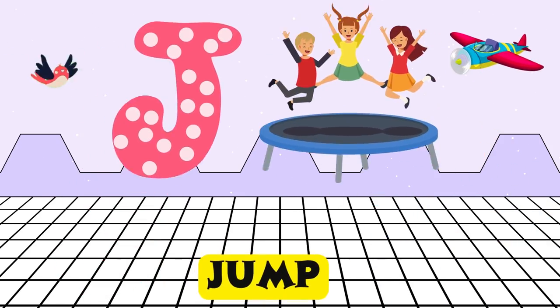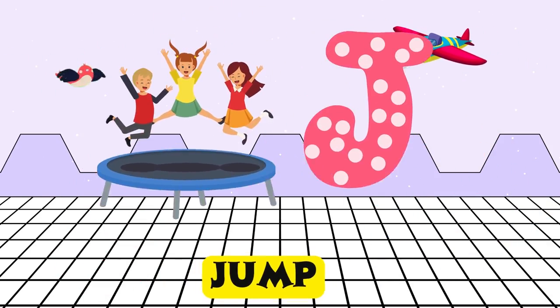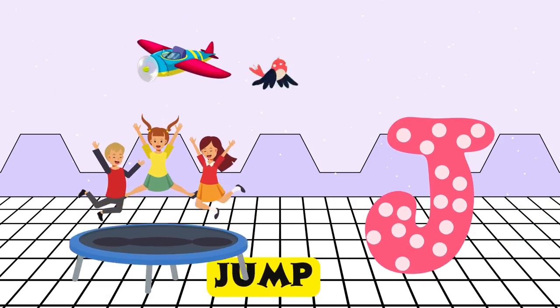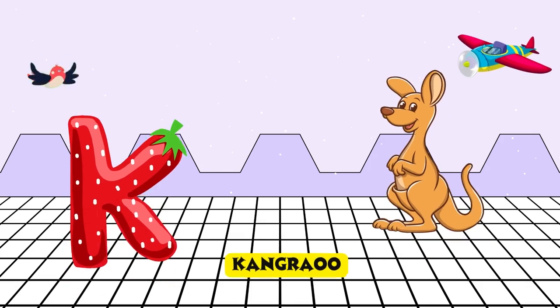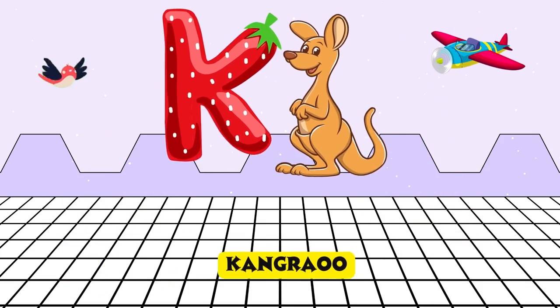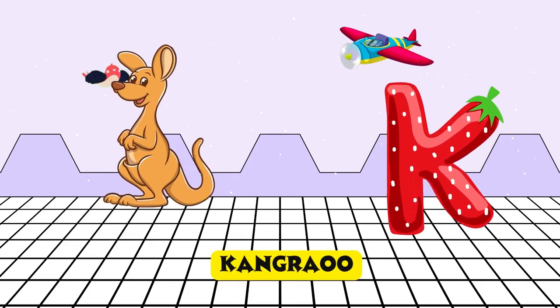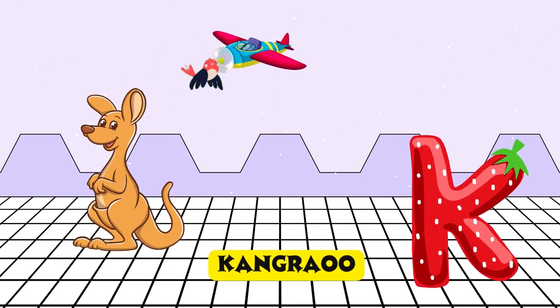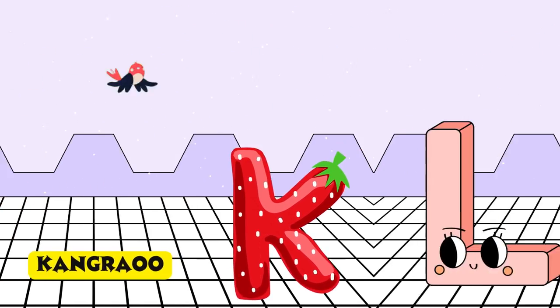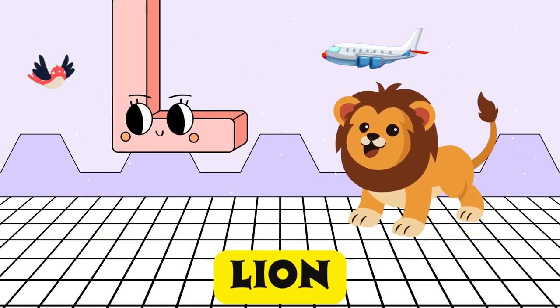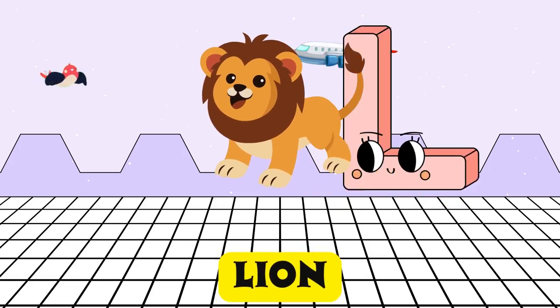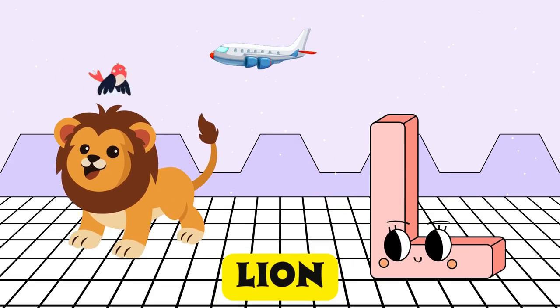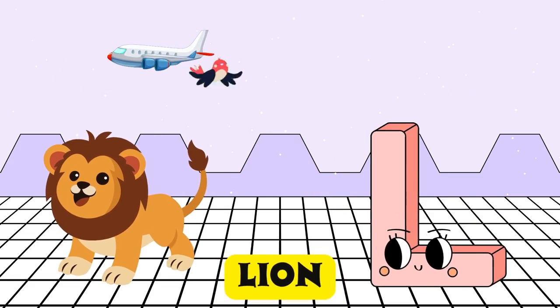J is for jump, j-j-jump. K is for kangaroo, k-k-kangaroo. L is for lion, l-l-lion.